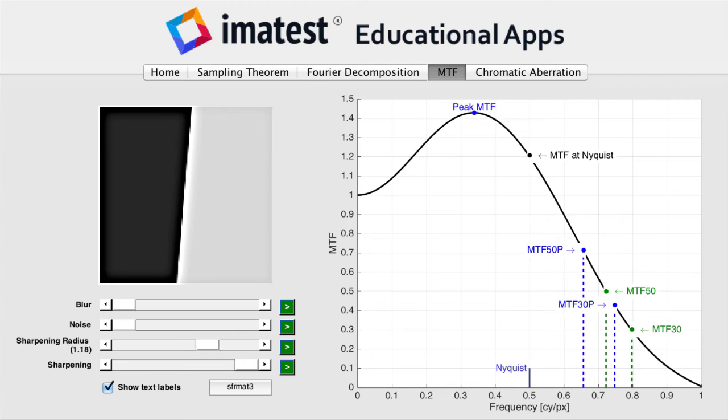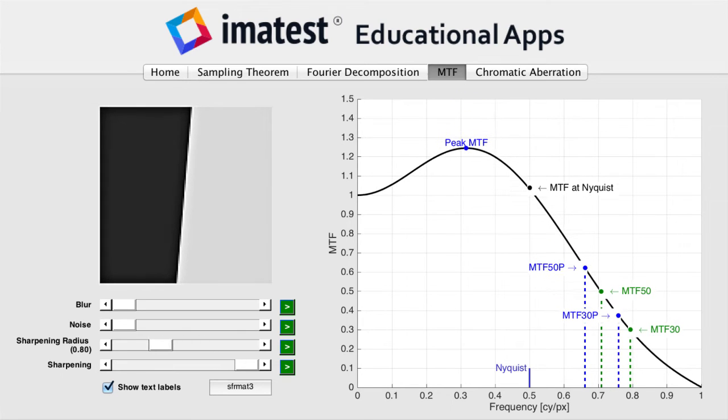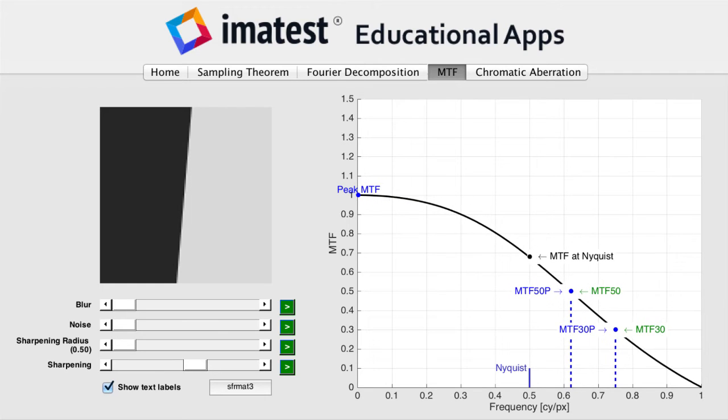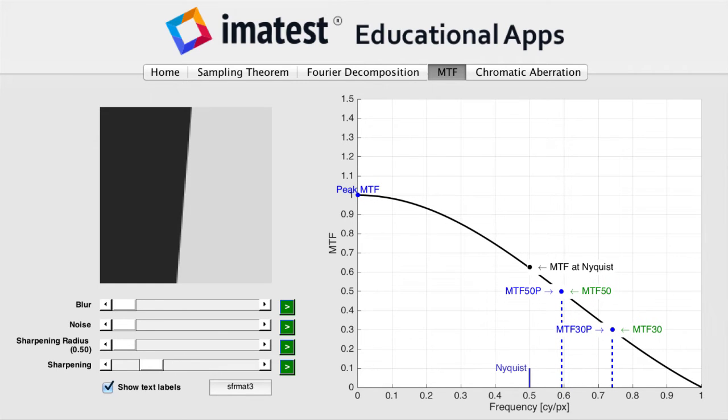MTF-50 is a commonly used metric which summarizes an MTF curve. MTF-50 is the spatial frequency where the system response is 50% of the baseline low-frequency response.